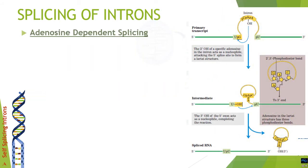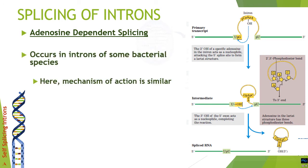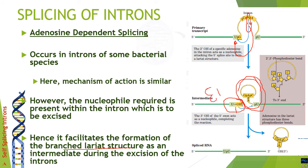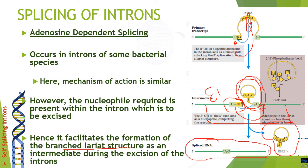Another group of self-splicing introns are adenosine-dependent introns, present in some bacterial species. The mechanism is similar, but the key difference is the formation of a branch lariat structure. The adenosine used as a nucleophile is located within the intron itself. It causes a nucleophilic attack at the five-prime boundary of the intron, forming a circular lariat structure. Then the free three-prime hydroxyl of exon one attacks the three-prime boundary, linking the two exons together and splicing the intron out as a lariat, giving mature spliced RNA.